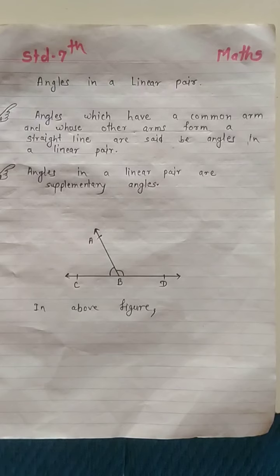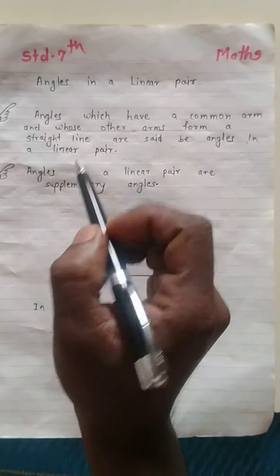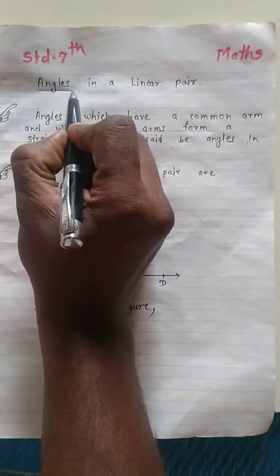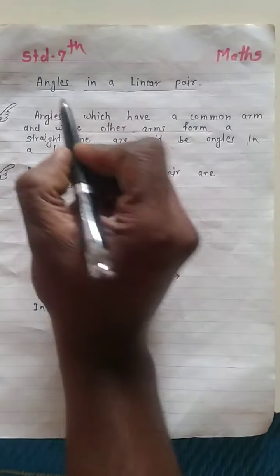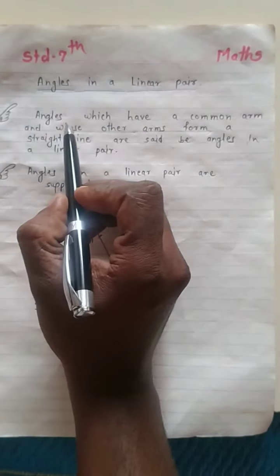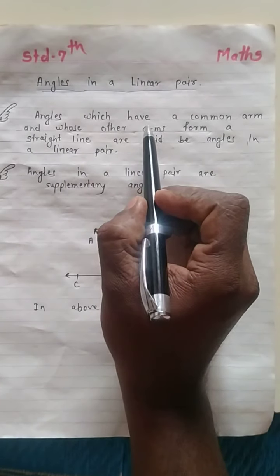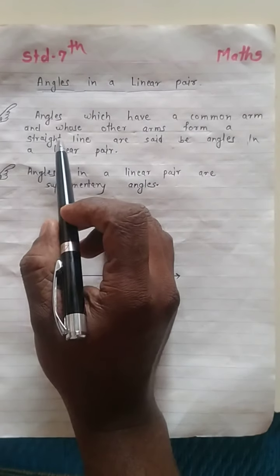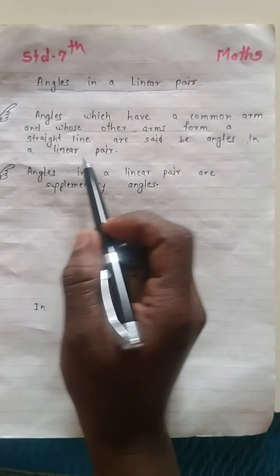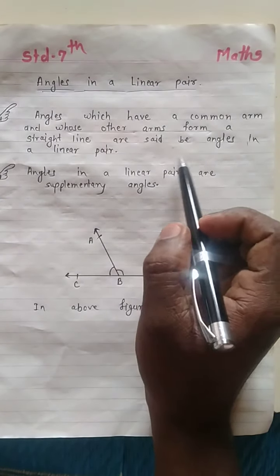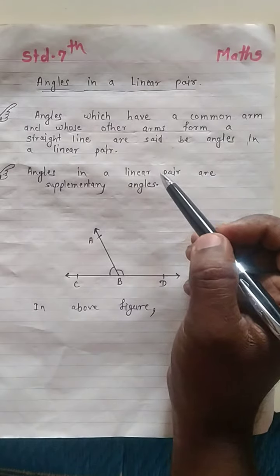Namaskar Vidyarthi Mitrano. Today we will learn about angles in a linear pair. The definition is that angles which have a common arm and whose other arms form a straight line are said to be angles in a linear pair.